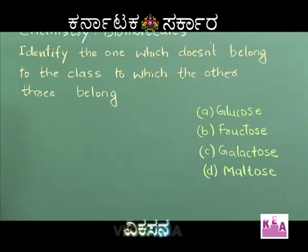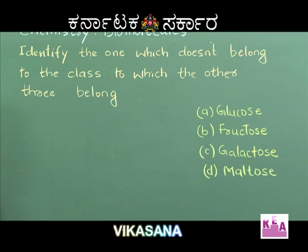Let's solve a question. Identify the one which does not belong to the class to which the other three belong. Option A: Glucose. Option B: Fructose. Option C: Galactose. Option D: Maltose.